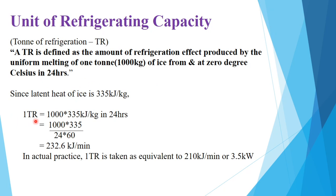One ton of refrigeration equals 1000 multiplied by the latent heat, divided by 24 hours. That is equal to 1000 × 335 divided by 24 × 60. We multiply by 60 to convert 24 hours into minutes. So we get the answer 232.6 kilojoules per minute.